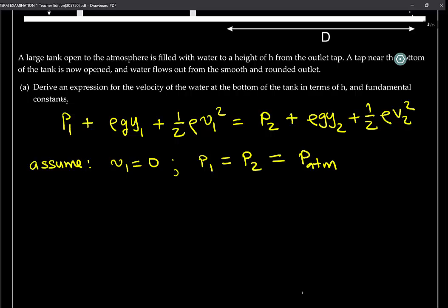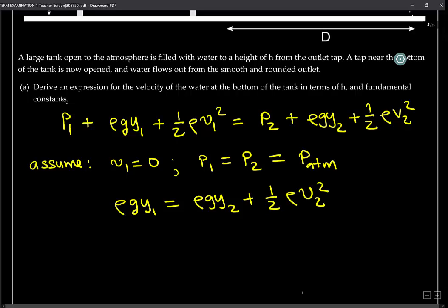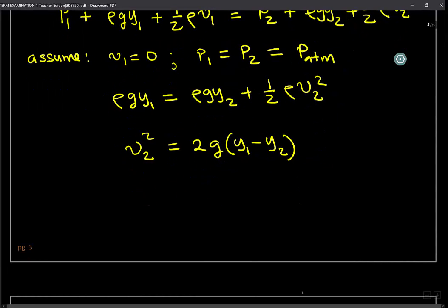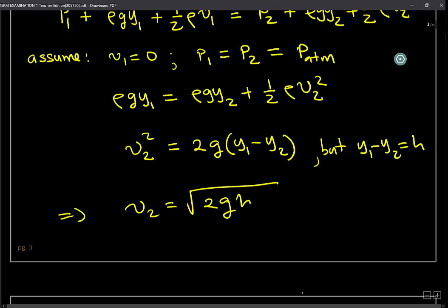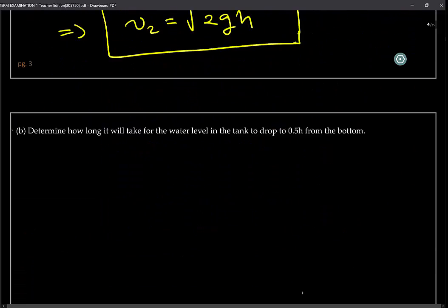Both openings are open to air, meaning that p1 is equal to p2, which is equal to atmospheric pressure. This indicates that ρgy1 equals ρgy2 plus one-half ρv2², and therefore v2² equals 2g(y1 minus y2). Since y1 minus y2 is just the height of the tank H, we can say that v2 is the square root of 2gH. That will be the velocity at the bottom of the tank.